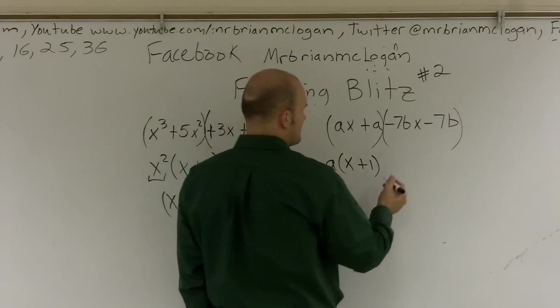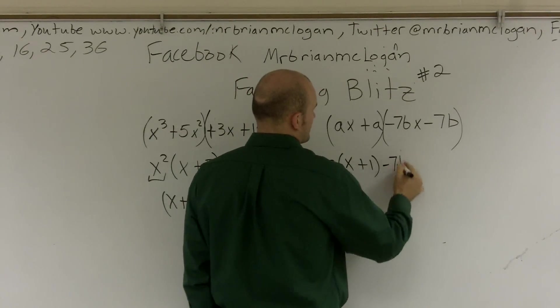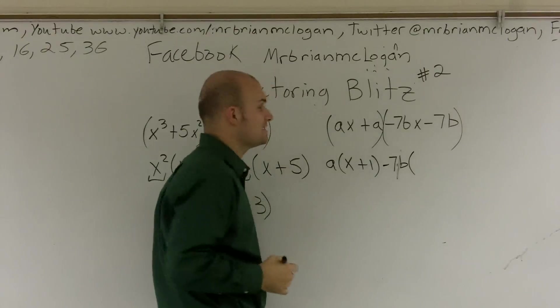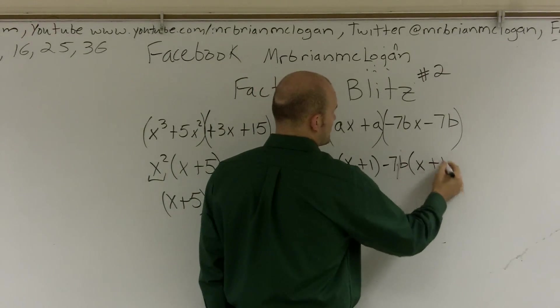Here, I can factor out a negative 7b. When I factor out a negative 7b, I'm left with an x plus 1.